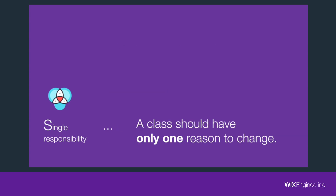The first principle is the Single Responsibility Principle. A class should have only one reason to change. A class is what a class does. The more a class does, the more likely it will be changed. The more a class changes, the more likely it will introduce bugs. This is why we need to keep in mind that a class should have only one responsibility.